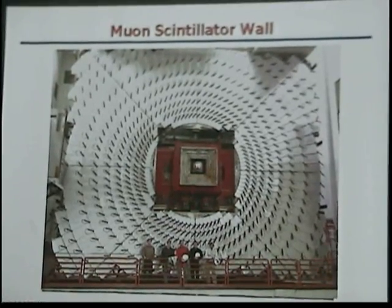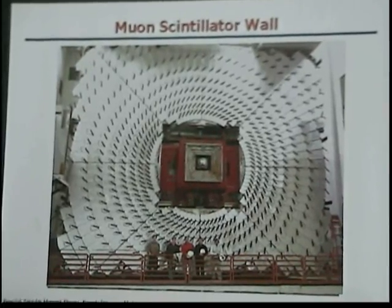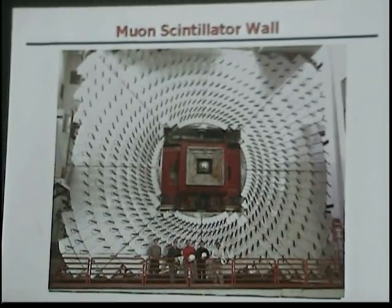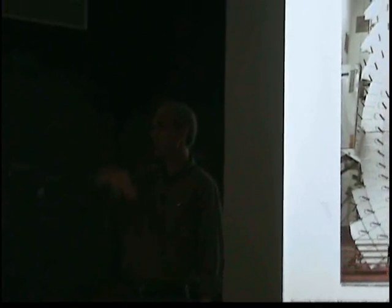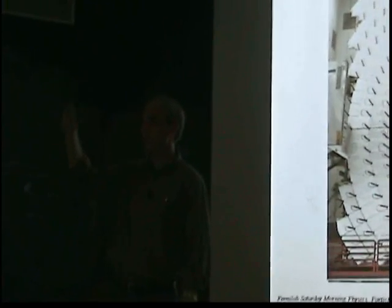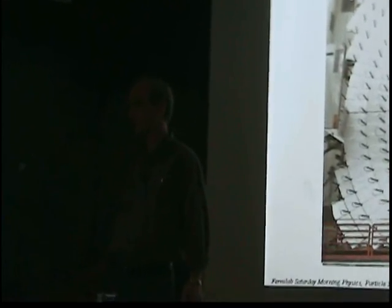The reason why these neutrino detectors are deep underground is exactly for that reason — to block the muon from the cosmic rays. So you use the Earth as a shield, but you have to go into a mine.